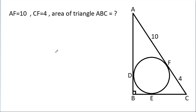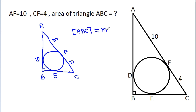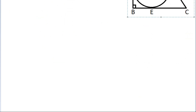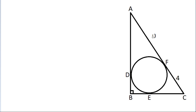So, if we have a circle inside a right angle triangle, suppose the vertices are A, B, C and the tangent points are D, E, F. If AF is M and CF is N, then the area of ABC will be equal to M times N.